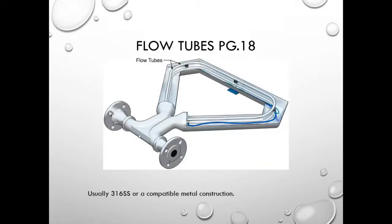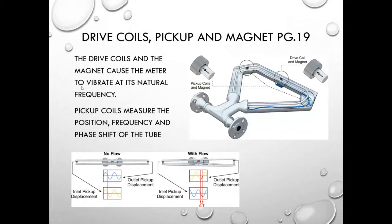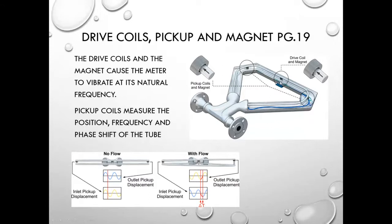Flow tubes come in different shapes. These are typically 316 stainless steel construction, or whatever particular alloy is required for compatibility with your process measurement. Drive coils and the magnet are used to make the tube vibrate at its natural frequency. If you've touched the Coriolis cutaway on the flow trainer lab, you can feel those vibrations — that's what the drive coil and magnet do.